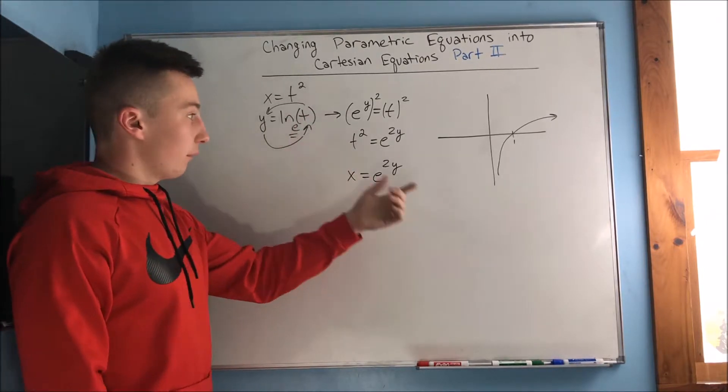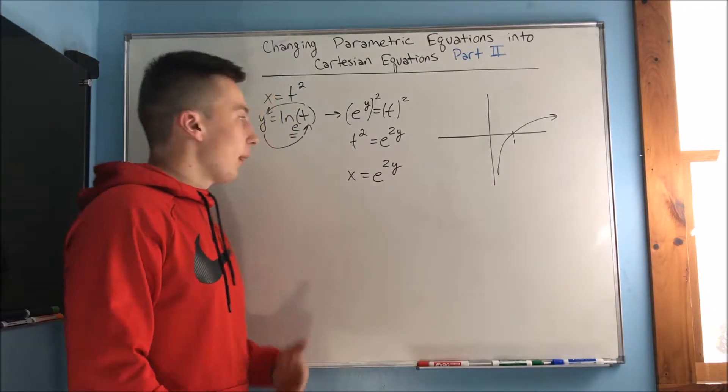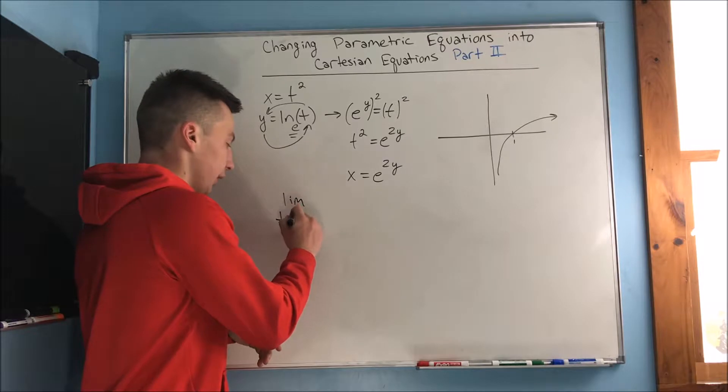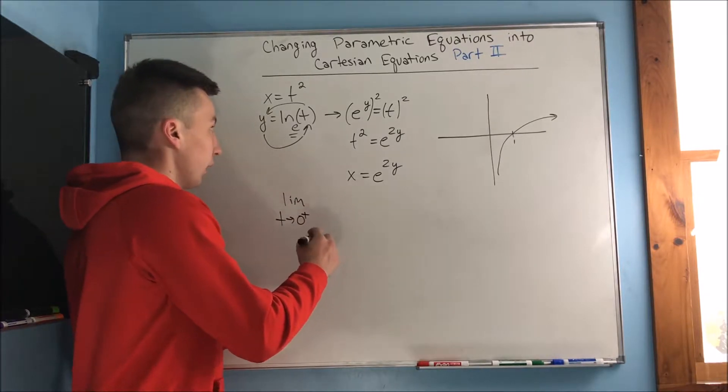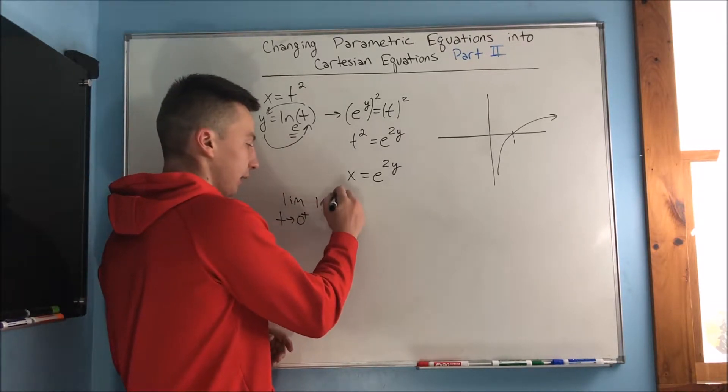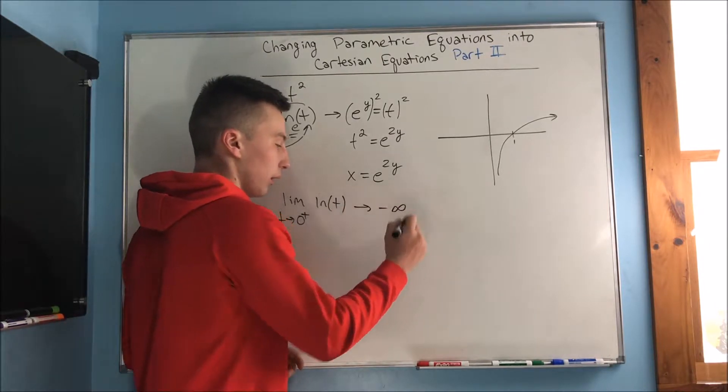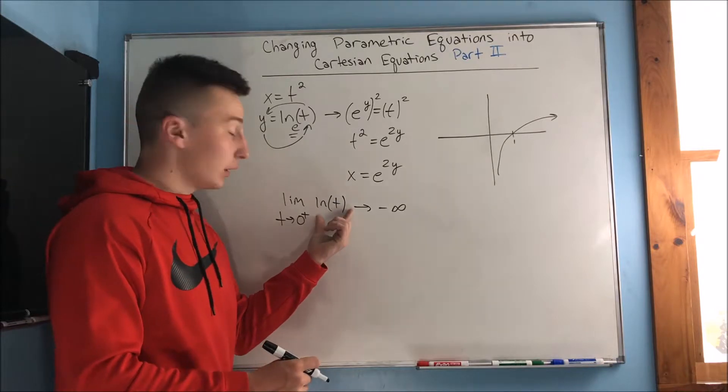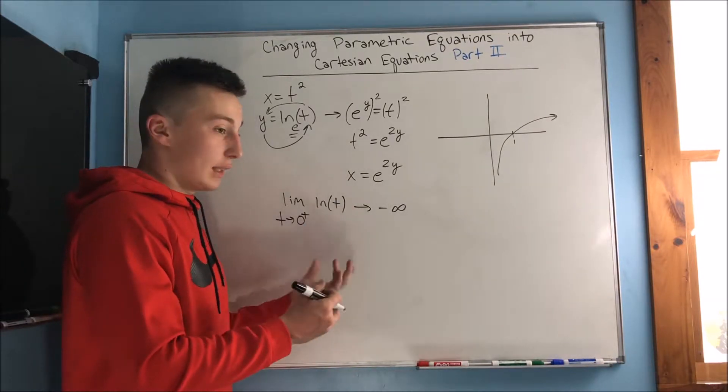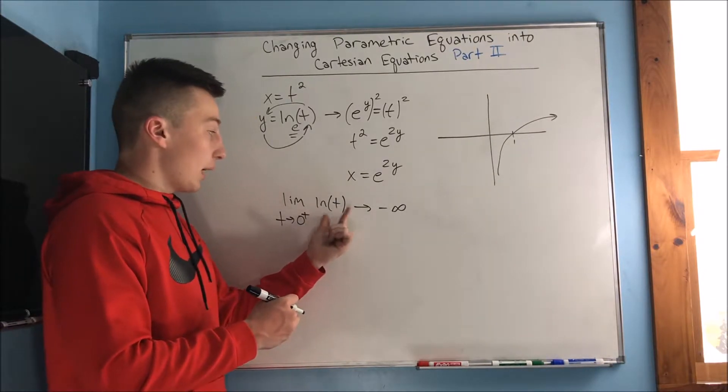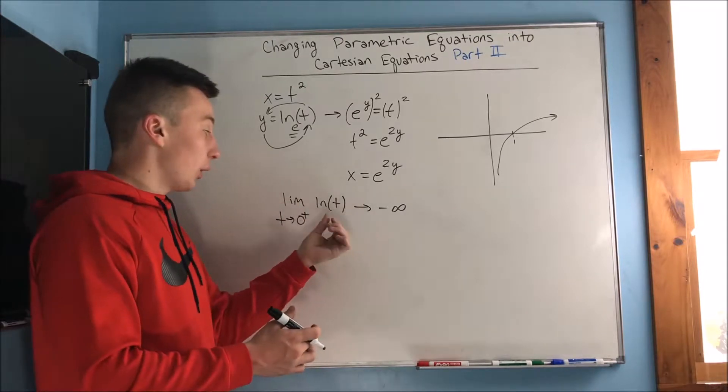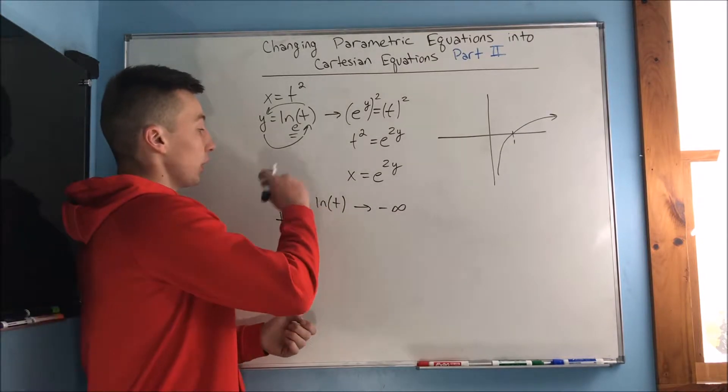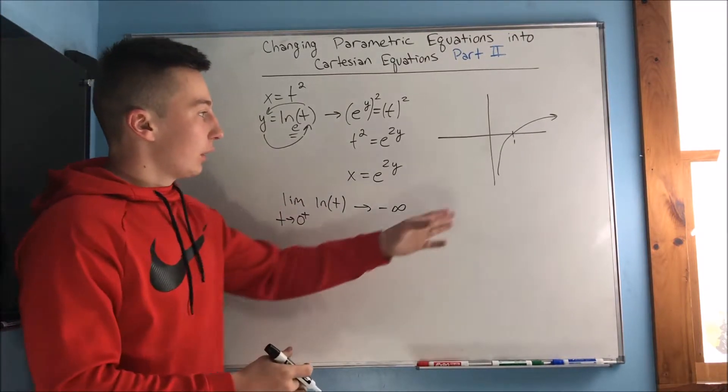You can kind of picture that as the limit as t approaches zero from the positive side of natural log of t, and that goes to negative infinity. If you plug in natural log of a fraction, of something that's less than one, you end up getting a negative number. As you approach zero you get a bigger and bigger negative number and you're going to go off to negative infinity.